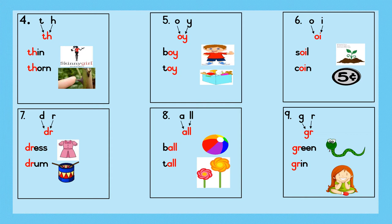Example 5. O-y-oy. B-o-y: boy. Sentence: The boy is happy. T-oi: toy. Sentence: My toys are in the box.